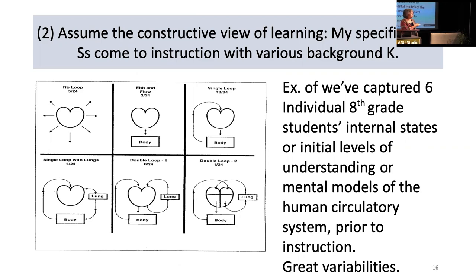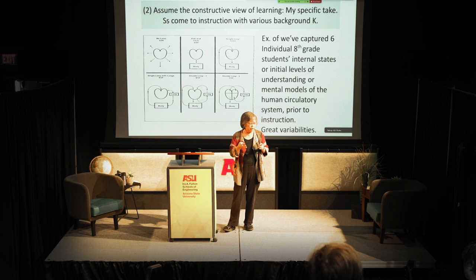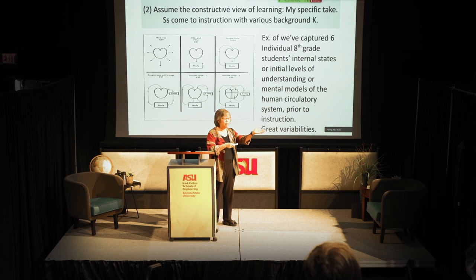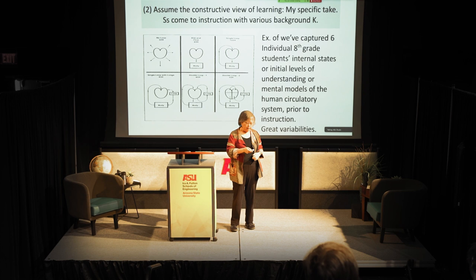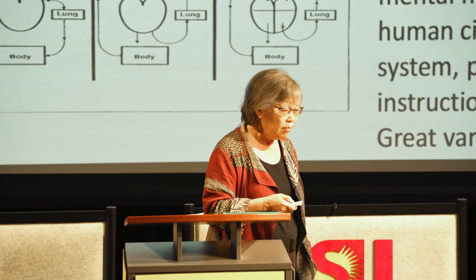Students typically come to instruction with various background knowledge. Here we've captured six mental models of students' ideas about the circulatory system before instruction. We work with younger students so their knowledge is easier to capture. The models range from upper left to lower right, and the most popular one is a very simple single loop with no lungs.